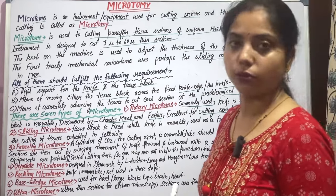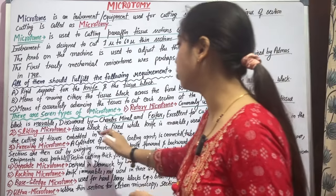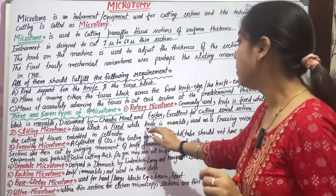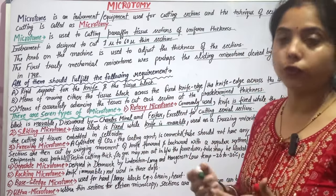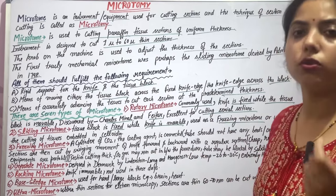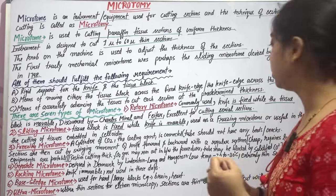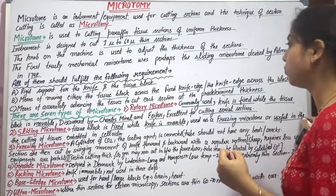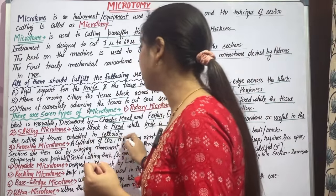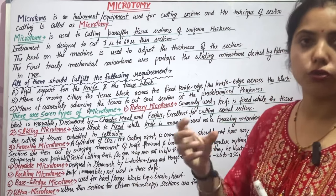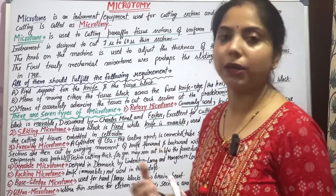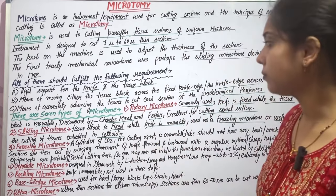The second type is the sliding microtome. In the sliding microtome, the tissue block is fixed and the knife is moved with a gliding movement. It is also used as a freezing microtome and is very helpful for cutting.